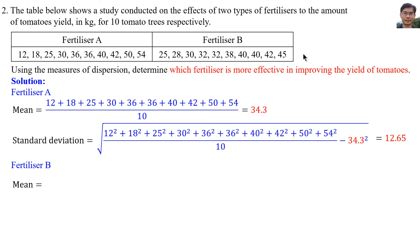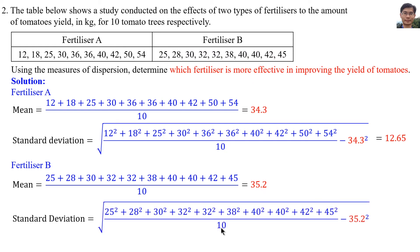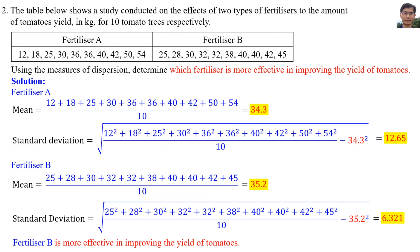For Fertilizer B, the mean equals the average of all the values, which equals 35.2. The standard deviation equals the square root of variance; we square all the values, add them, divide by the total number of data (10), minus the mean squared, then take the square root, giving standard deviation equals 6.321. Comparing the means: Fertilizer B has a mean of 35.2 and Fertilizer A has a mean of 34.3, so Fertilizer B produces more yield. The standard deviation of Fertilizer B is 6.321, which is smaller than that of Fertilizer A. In conclusion, Fertilizer B is more effective in improving the yield of tomatoes.